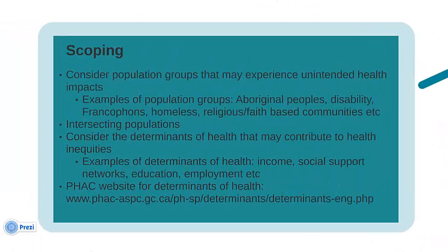Now let's jump back into the specific steps of the HIA tool. The first step is scoping. In this step, you have to think about the population groups and the determinants of health. When you are identifying the population groups, think about which populations may experience significant unintended health impacts as a result of the planned policy, program or initiative. Examples of the population groups include Aboriginal peoples, disability, Francophone, homeless, or religious or faith-based communities. It is also important to consider intersecting populations — for example, low-income older immigrant women may face greater health-related disadvantages.